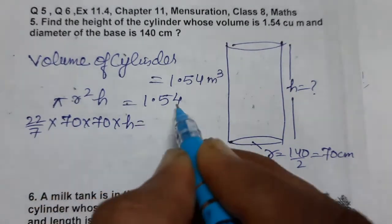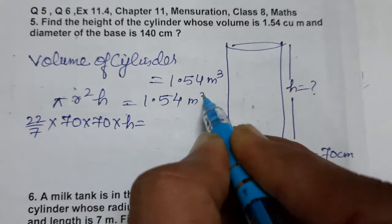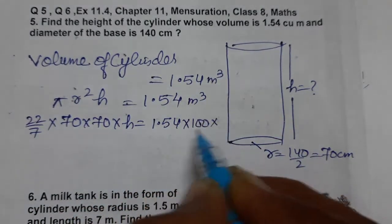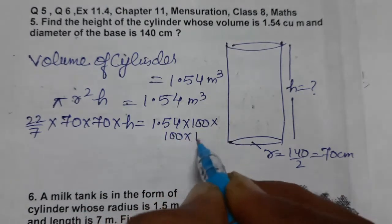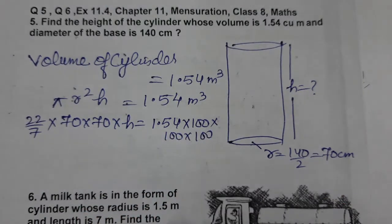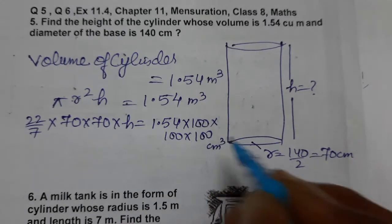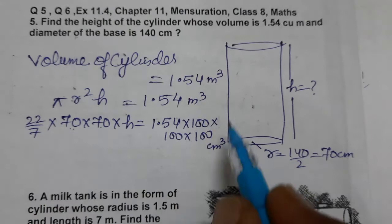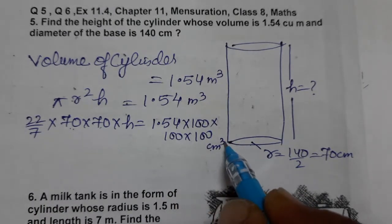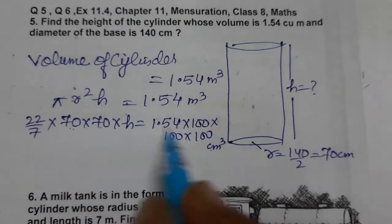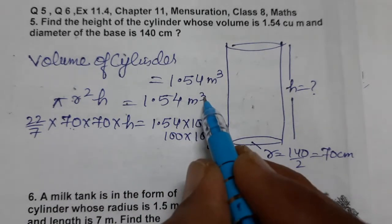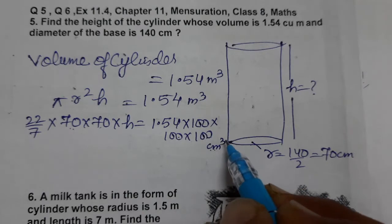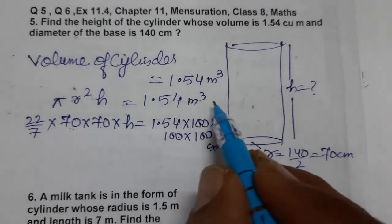The volume is in meter cube, so we need to convert it to centimeter cube because both radius and height are in centimeters. Since 1 meter = 100 centimeters, 1 meter cube = 100 × 100 × 100 centimeter cube. So we multiply 1.54 by 100³ to convert into centimeter cube, making the comparison valid so we can find the height.